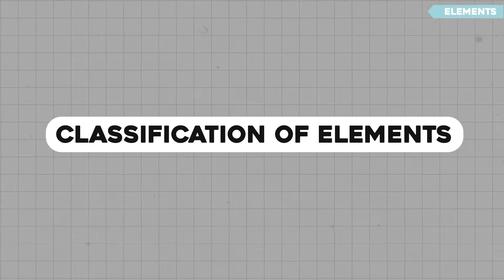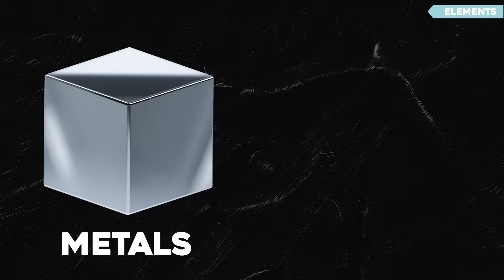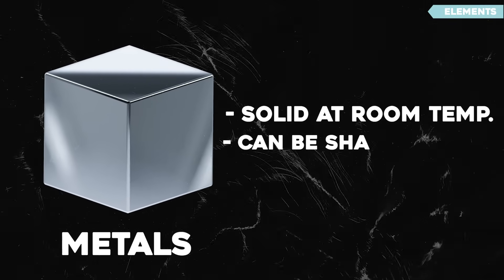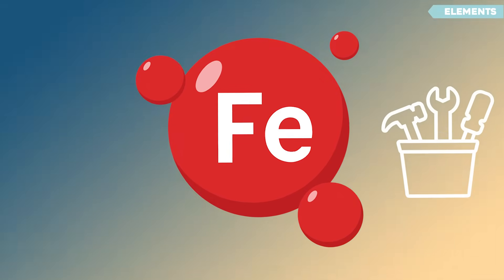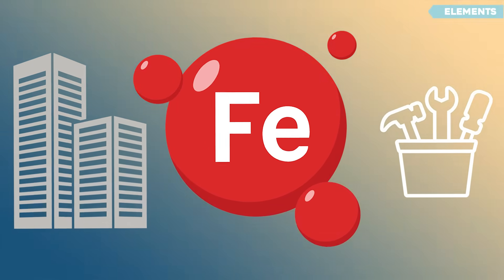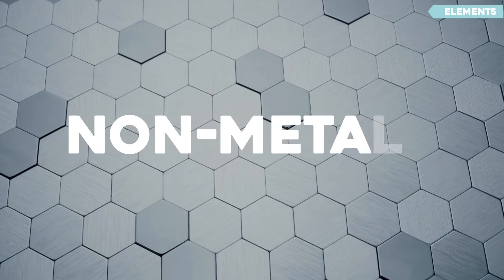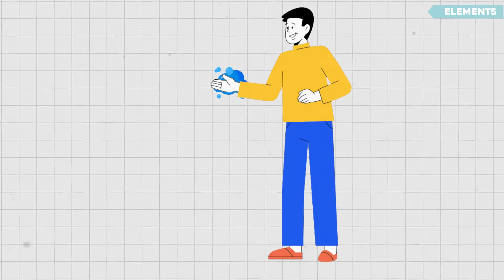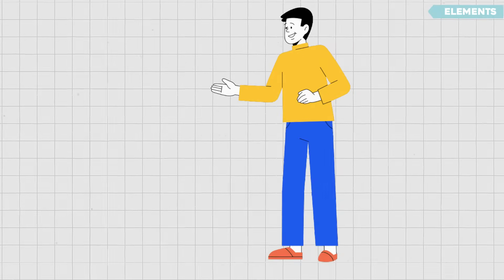Classification of Elements. Elements are classified into four main categories. First, metals: metals are solid at room temperature, shiny, and can be shaped easily. For example, iron is used to make things like tools and structures because it's strong and durable. Second, non-metals: non-metals can be solid or gas at room temperature. For example, oxygen is a non-metal, and it's what we breathe in every day.